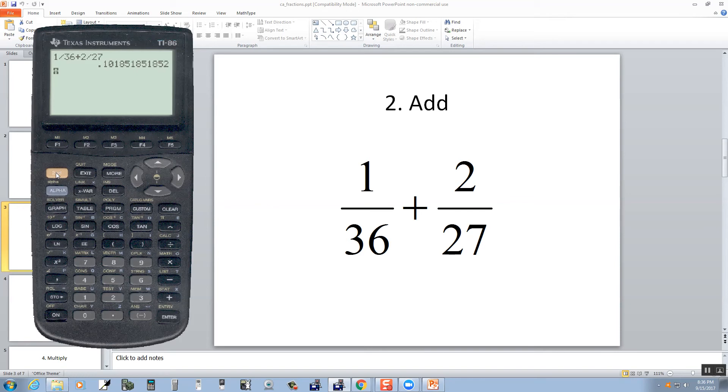If I want to change it to fraction, I'm going to do my second button. And then do my multiplication for the math. I want to go to the miscellaneous. So I'll do F5. Then I want to do more to go to the next page. And then choose F1 for fraction. And then press enter. And our answer would be 11 over 108.